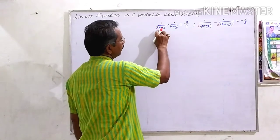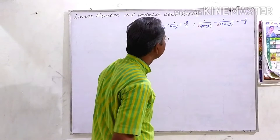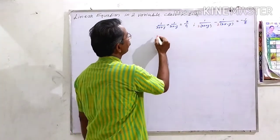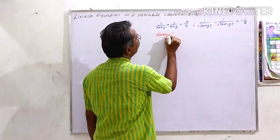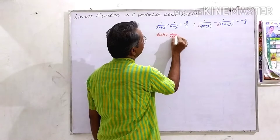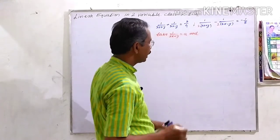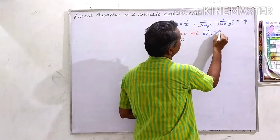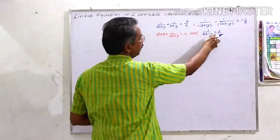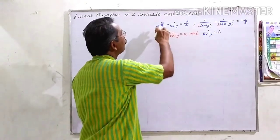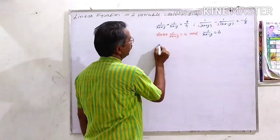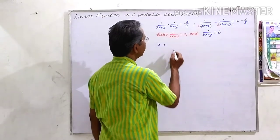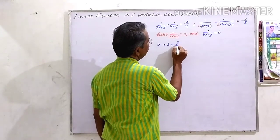Looking at the equations, 1 upon (3x plus y) appears twice and 1 upon (3x minus y) appears twice — exactly the same. So, let 1 upon (3x plus y) equal to a and 1 upon (3x minus y) equal to b. You can take any letters; I have taken a and b. Substituting, we get: a plus b equal to 3 upon 4.